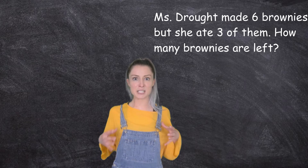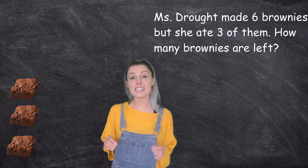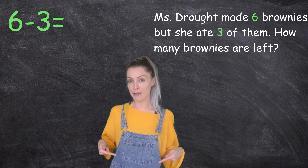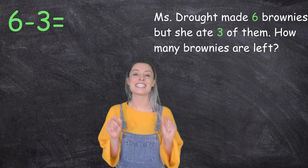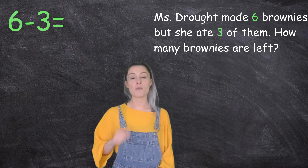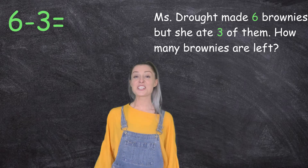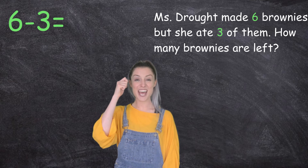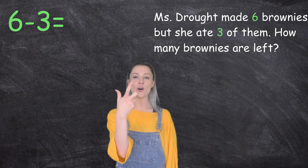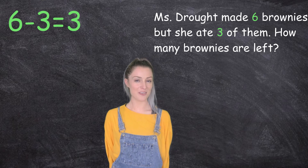Okay, so she made six brownies — six is our whole number — but then she ate three, so three must be the part we're taking away because they're in her belly now. So we need to do six take away three equals. You can use whatever strategy you want — draw it, use a number line. I'm going to lock it in my brain: starting at six and counting down three — six, five, four, three — so six take away three equals three. She's still got three brownies to enjoy!